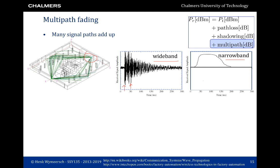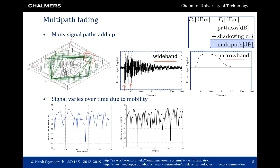The signal also varies over time due to mobility. With time on the x-axis and receive power on the y-axis, the receive power fluctuates with distance. Over one second the receive power fluctuates somewhat, but when the receiver moves faster the same kind of fluctuation occurs at a much faster timescale — over 0.2 seconds we see lots of fluctuations. The effects of mobility, wideband and narrowband channels, and the multiple adding up of propagation paths is the topic of the next two lectures.